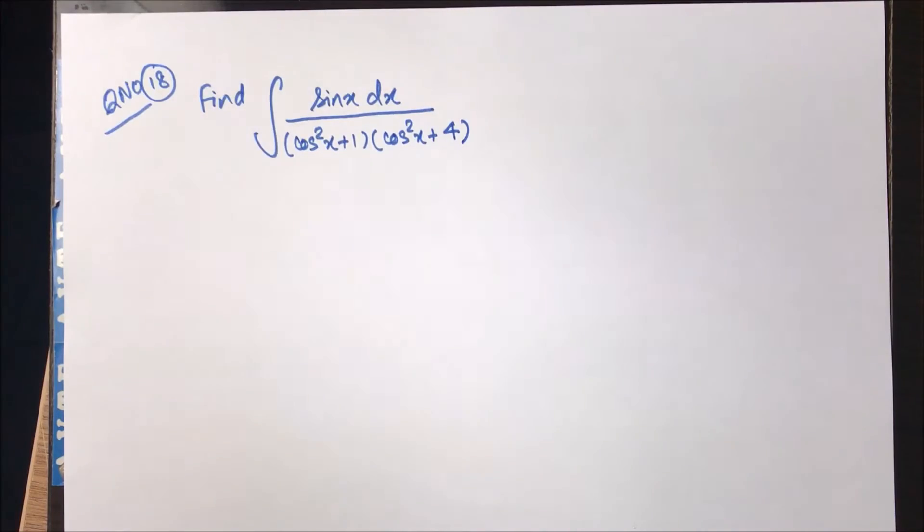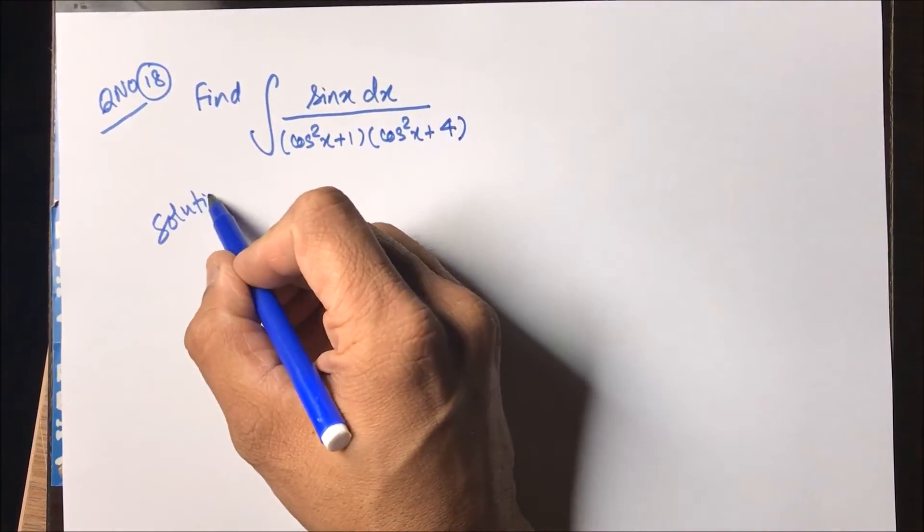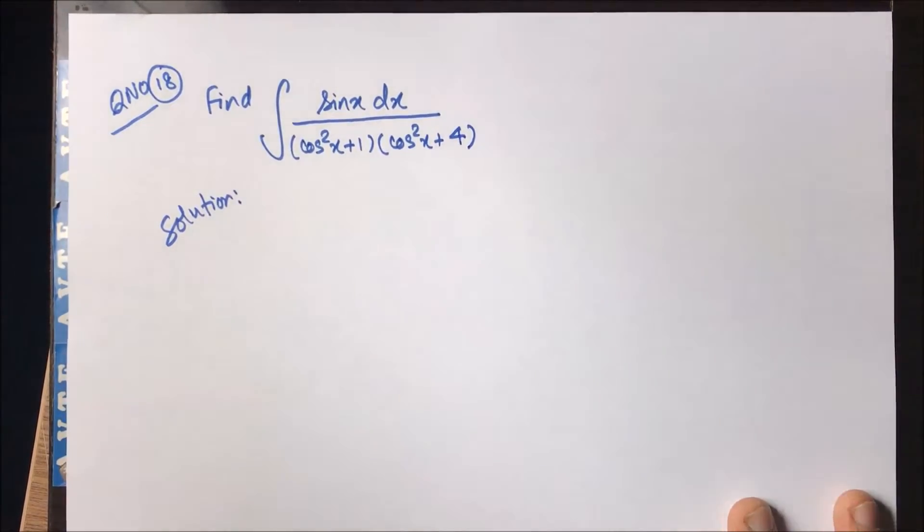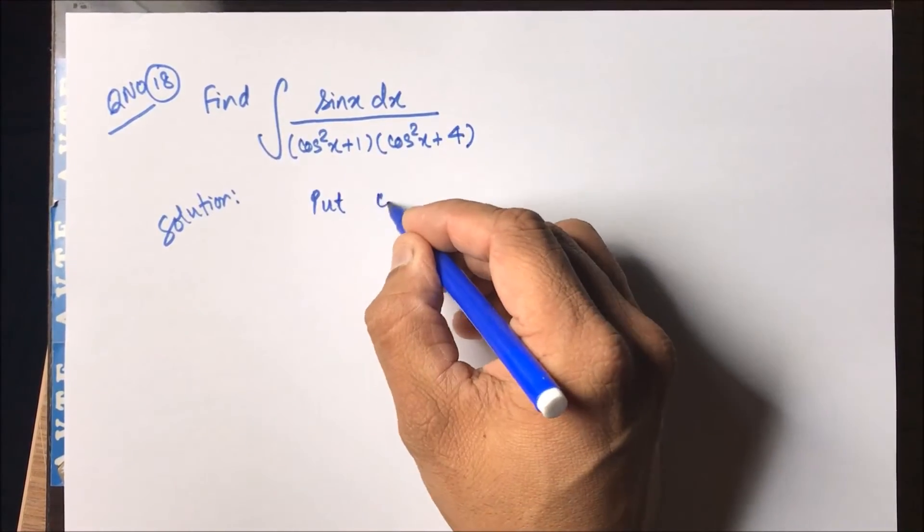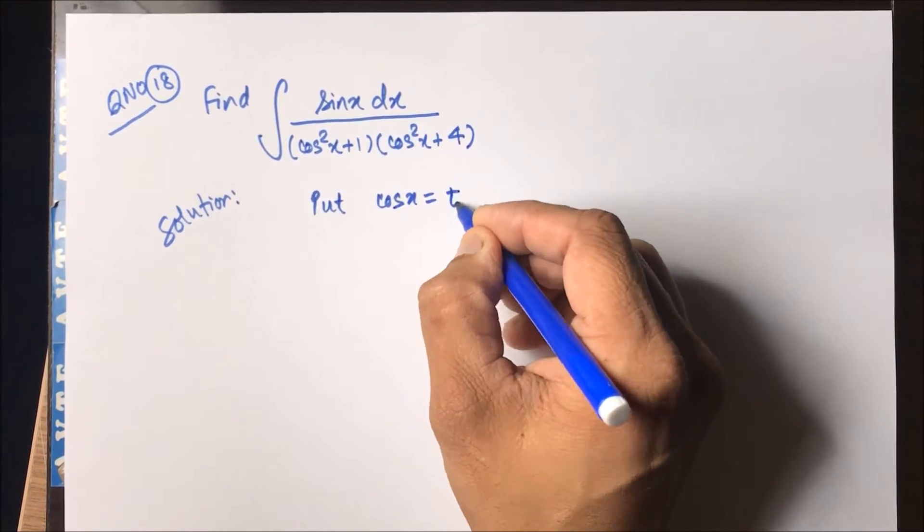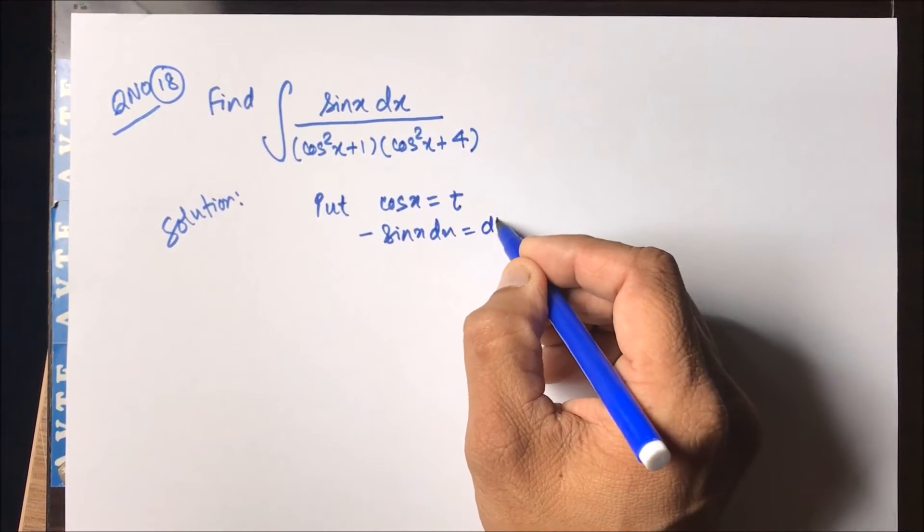The integration approach is very important. In this question one can easily see that the beginning will be by putting cos as some variable by substitution. So if we put cos x as t, then we can get the numerator. We put cos x is equal to t to get minus sine x dx is equal to dt.